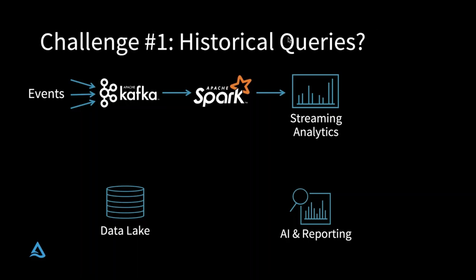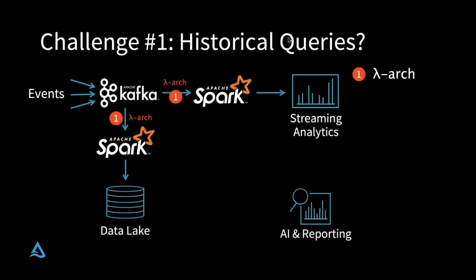But this brings us to challenge number one: historical queries. Kafka is great for real-time analysis, but it can only store a day or a week's worth of data — you don't want to store years of data in Kafka. A pretty common pattern is the Lambda architecture, which, as far as I can tell, is basically doing everything twice. You have one real-time pipeline doing an approximation of what's happening right now, and another pipeline that's a little more curated, running more slowly, archiving all of that data into your data lake. And once you have all that data in the data lake, you can run Spark SQL queries over it for AI and reporting.